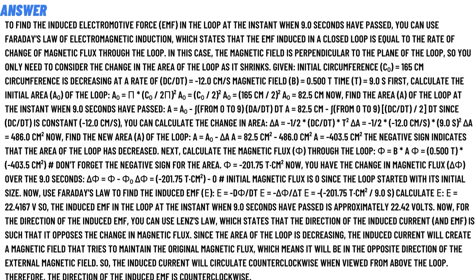need to consider the change in the area of the loop as it shrinks. Given: initial circumference C₀ = 165 cm, circumference decreases at a rate dC/dt = -12.0 cm/s.